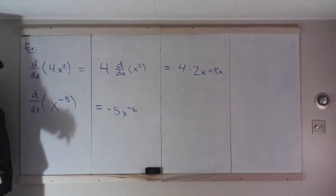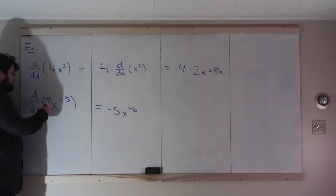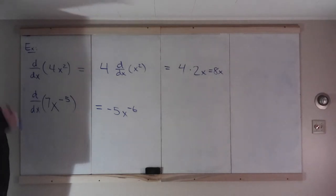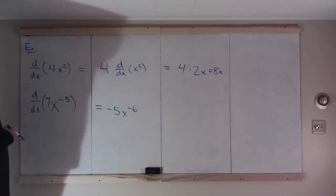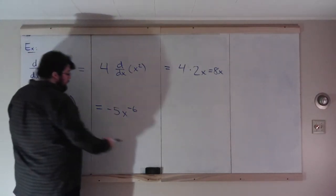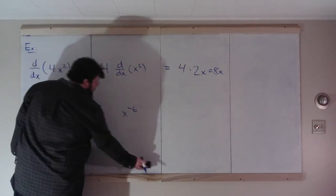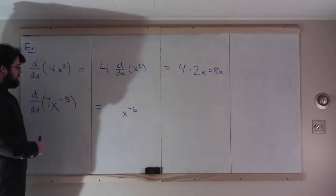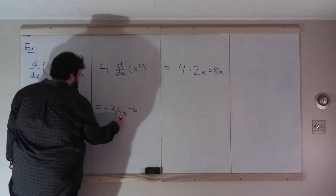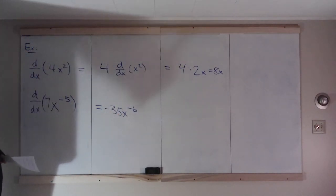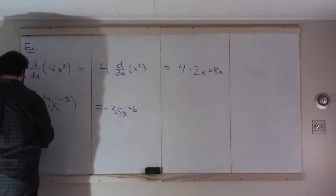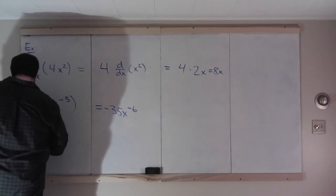What if we changed this to 7 times x to the negative 5th? That changes the answer by throwing a 7 in front of everything. You do the derivative of the x part and multiply by 7, giving 7 times negative 5x to the negative 6. So 7 times negative 5 is negative 35x to the negative 6.